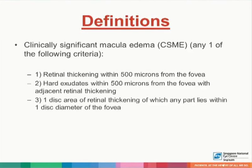Clinically significant macular edema is defined by the following three criteria, of which any one will fulfill the definition: retinal thickening within 500 microns from the fovea; hard exudates within 500 microns of the fovea with adjacent retinal thickening; and one disc area of retinal thickening of which any part lies within one disc diameter of the fovea.